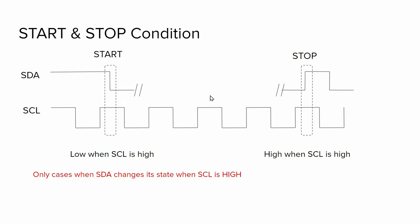When the master wants to initiate a communication, it first sends a start condition: when the SDA line goes low while the clock line is high. At this point, all the slaves wake up and listen to the master. Similarly, the master can terminate the communication by sending a stop condition: when the SDA line goes high while the clock line is high. These are the only two cases when it is allowed to change the state of the SDA when the clock line is high; otherwise it is prohibited.